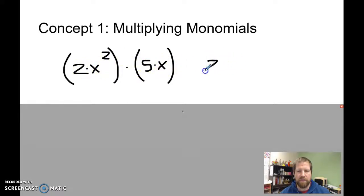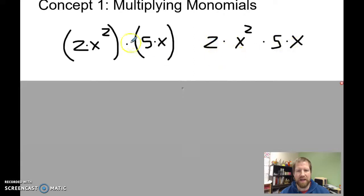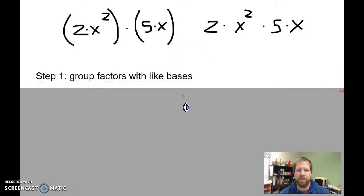So I have basically 2 times x squared times 5 times x. I just expanded that out, dropped the parentheses, and it doesn't matter what order I do these in, because it's all multiplication.